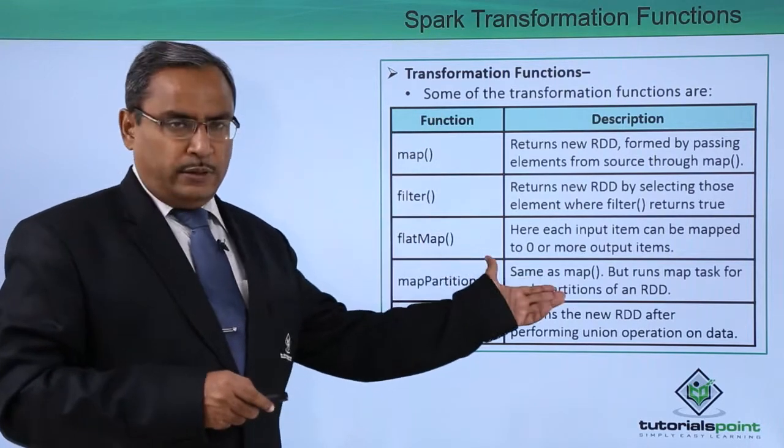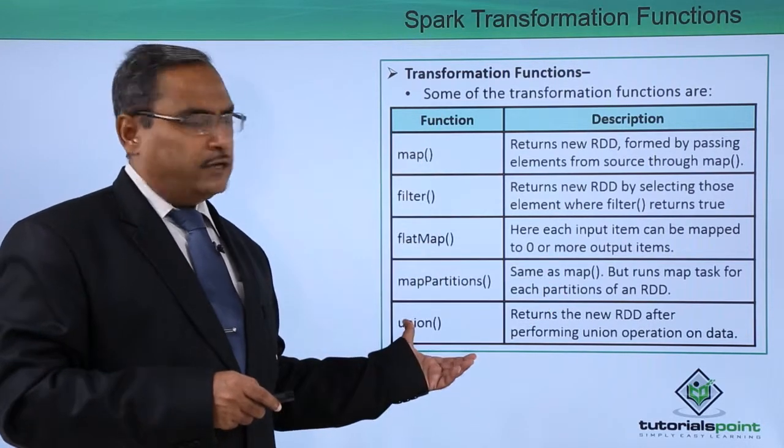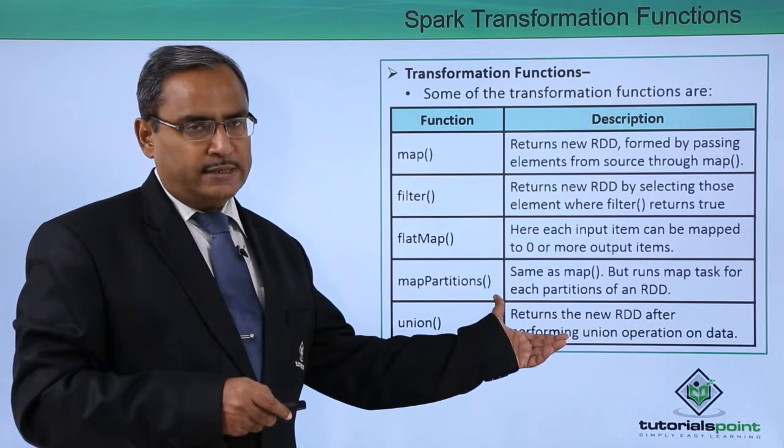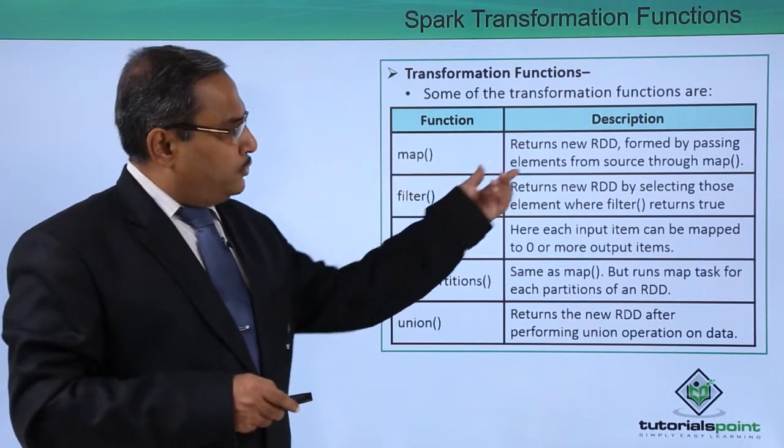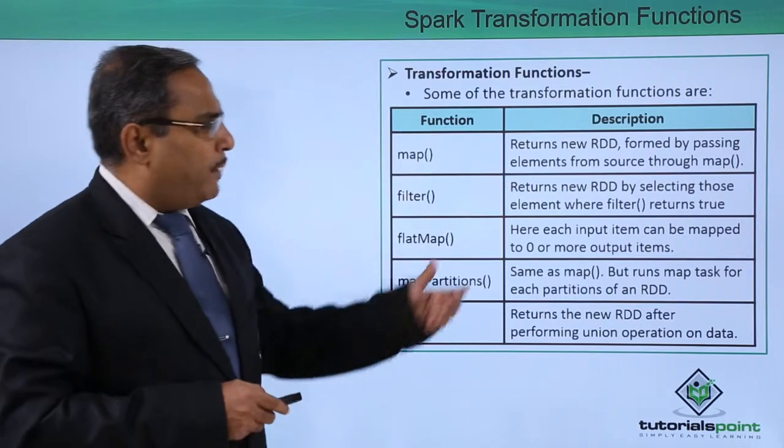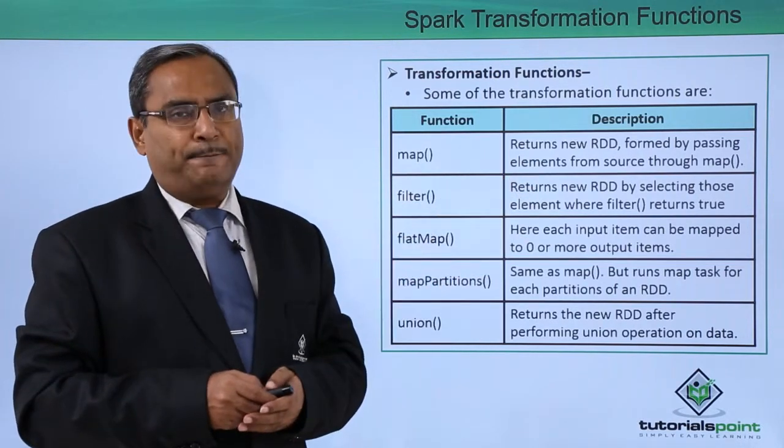Here we are having one table. The first column is containing the function name and the second column is containing the purpose and description of the function. First function is map. It returns new RDD formed by passing elements from the source through the map.